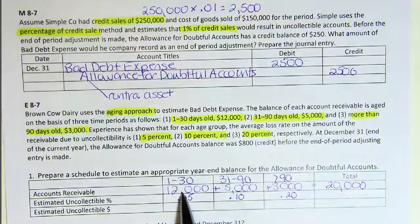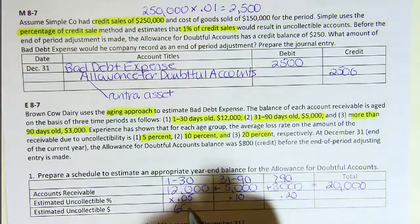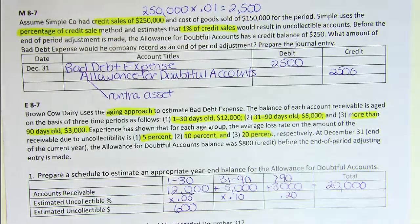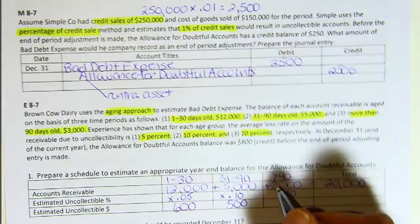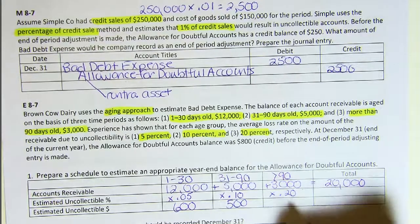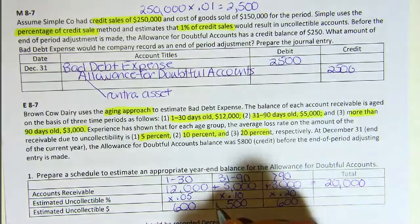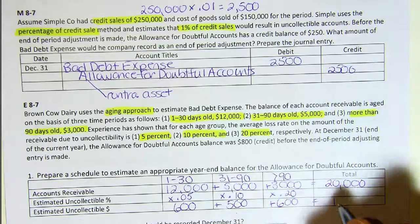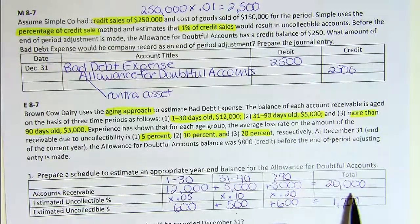Now we multiply the total owed in each category times the percent we won't collect to get the dollars we won't collect. $12,000 times 5% is $600. $5,000 times 10% gives us $500. And $3,000 times 20% gives us $600. Adding them up: $600 plus $500 plus $600 equals $1,700. So of the $20,000 owed to us, we think we will not collect $1,700. That amount is the desired balance in the allowance account.